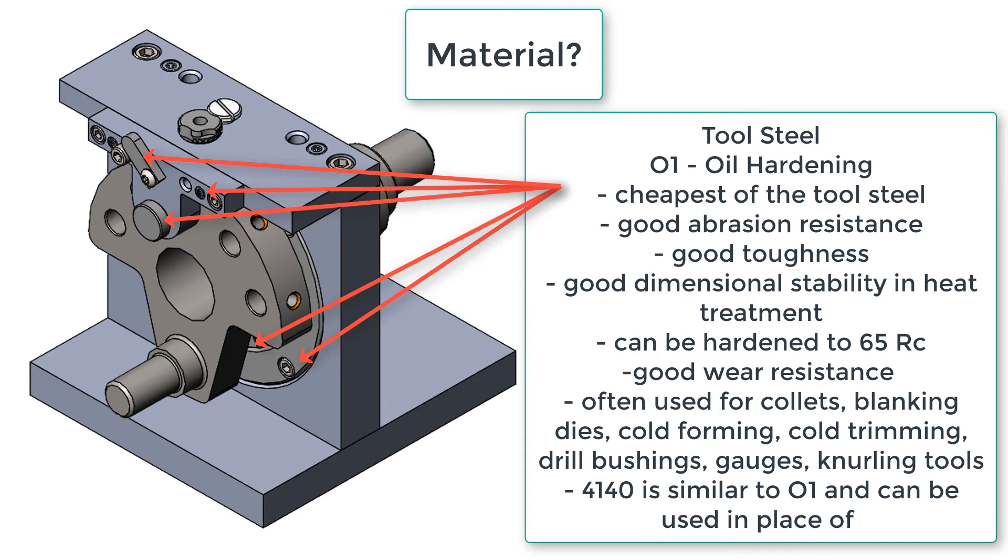This steel is often used for collets, blanking dies, cold forming, cold trimming, drill bushings, gauges, and knurling tools.